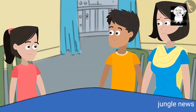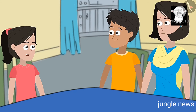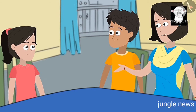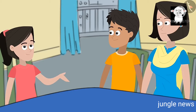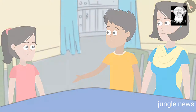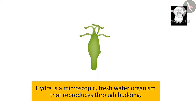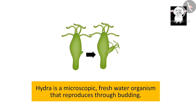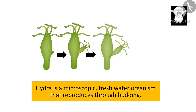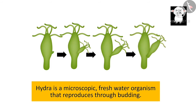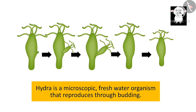You mean reproduction takes place at body parts other than the reproductive organs? Yes, you got it right. Let us take the example of hydra. Hydra is a microscopic fresh water organism that reproduces through budding. Under favourable conditions, a bud starts developing on it. The bud grows tentacles like the parent hydra. Eventually, the bud starts detaching from the parent organism. Once the bud is completely detached from the parent body, a new, independent and identical hydra is formed.